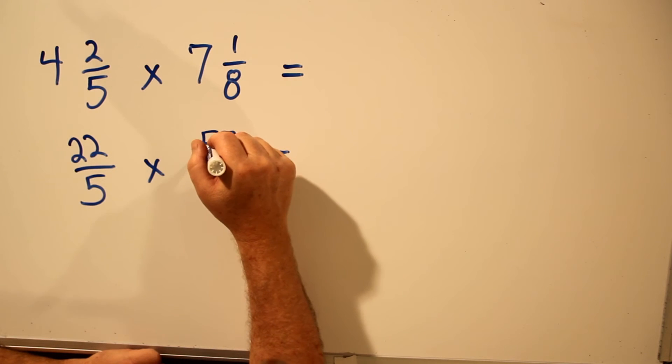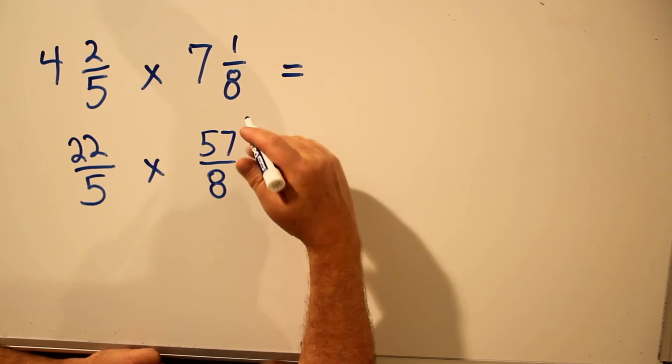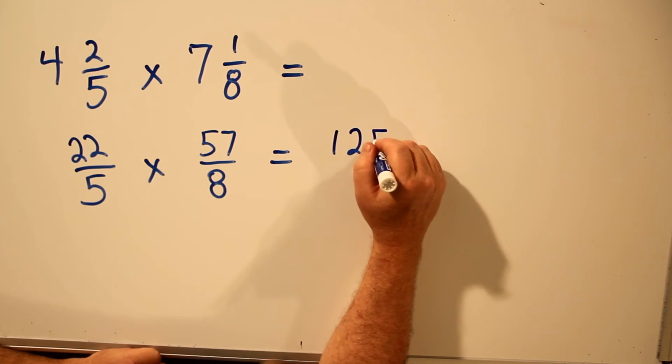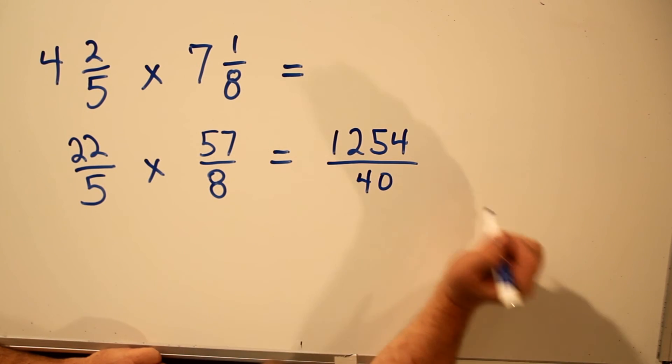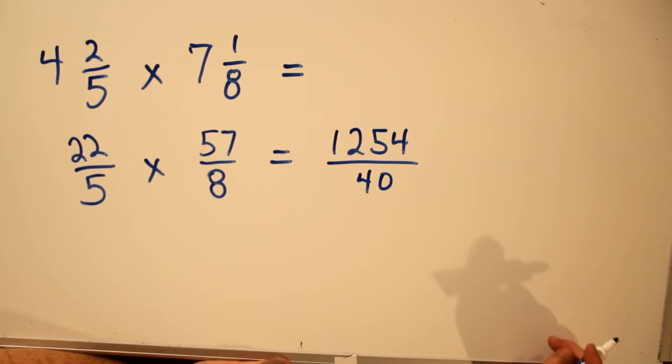Multiply 22 times 57. Multiply across the top. 1254 divided by 5 times 8, which is 40. And that's the answer as an improper fraction.